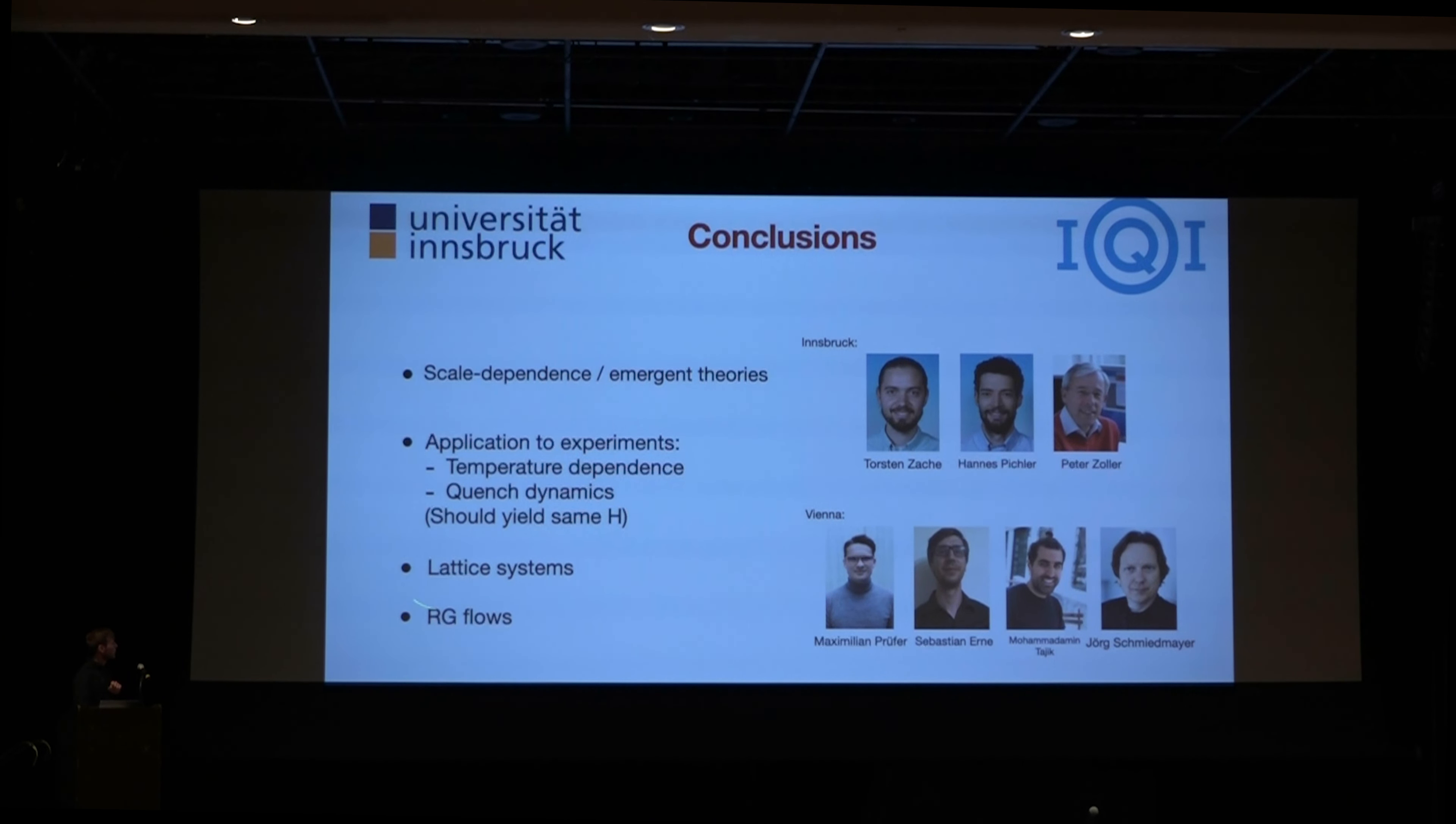So I think our methods also, in general, could be applied to lattice systems. We could renormalize a microscopic Hamiltonian of individual spins to maybe a more emergent, more effective theory at longer distance scales. And I think this would be a first step towards the question how we could access renormalization group flows from quantum simulation experiments.